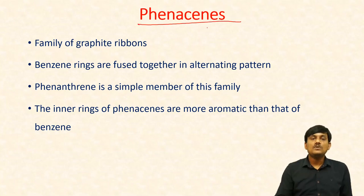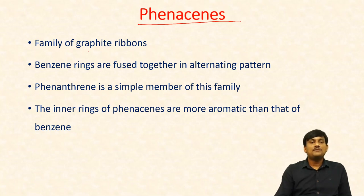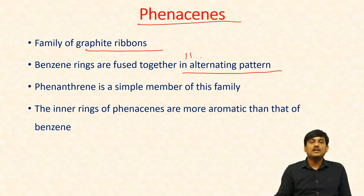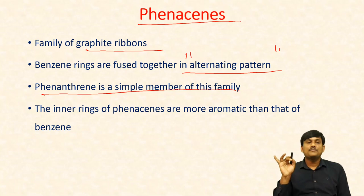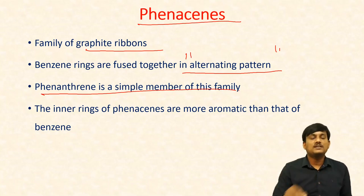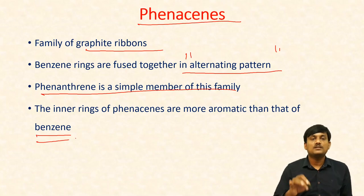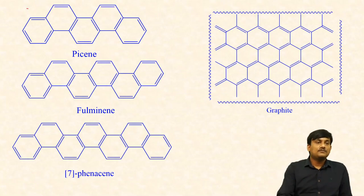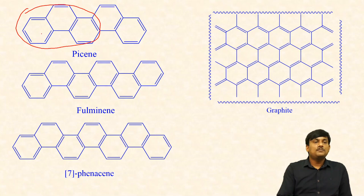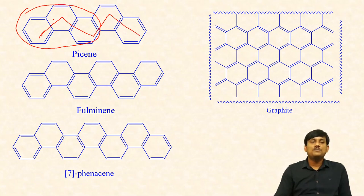And phenacenes — these are polycyclic aromatic hydrocarbons, a family of graphite ribbons. Benzene rings are fused together in an alternating pattern. Phenanthrene is a simple member of the phenacene family. The inner rings of phenacenes are more aromatic than that of benzene — this is a very important point. In picene, you can find five benzene rings in alternation.